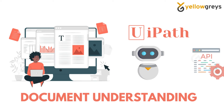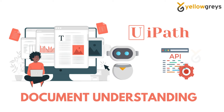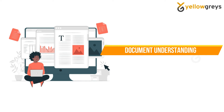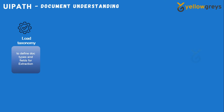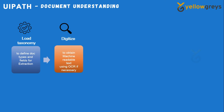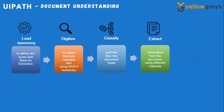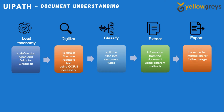With the API's help, you can delegate more of your digital paperwork. The Document Understanding Framework process is divided into five stages: first, Load Taxonomy to define your document types and fields for extraction; then Digitize your document, converting files into readable text using OCR if necessary; then Classify your document, splitting the files into document types; then Extract information from the document using different methods; and finally Export the extracted information for further use.